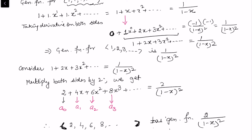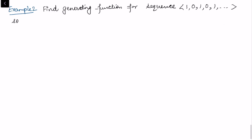Now in this example I want to find the generating function for the sequence 1, 0, 1, 0, 1, 0, ... This is an alternating sequence. Here the aₙ's are given to us, n going from 0 to infinity.